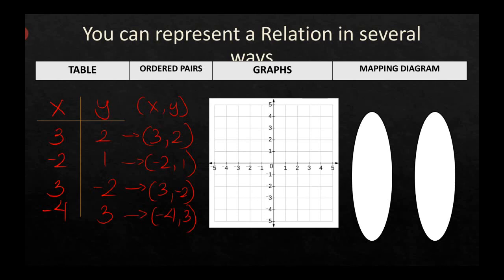To graph ordered pairs, we use a Cartesian plane and plot each point. For (3, 2), we go to x = 3 and y = 2 and mark their intersection. For (negative 2, 1), we find x = negative 2 and y = positive 1. For (3, negative 2), x = 3 and the y-value is below zero. And for (negative 4, 3), we go to x = negative 4 and 3 units upward.